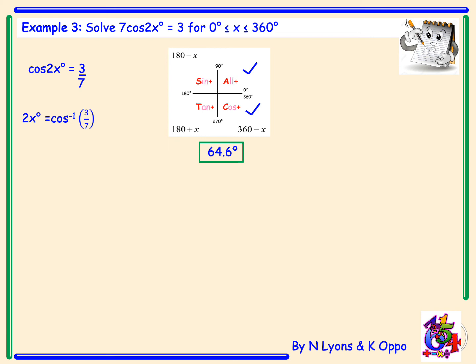That 64.6 degrees is what 2x equals in the first quadrant. So 2x equals 64.6 degrees, and in the fourth quadrant we do 360 minus 64.6 to get 295.4 degrees. These two angles are for the first wave, but since we have 2 waves, we add 360 degrees to each to get the next two angles — 64.6 plus 360 gives 424.6 degrees.